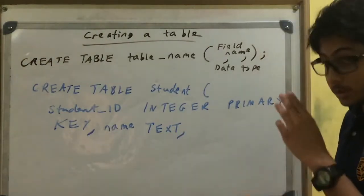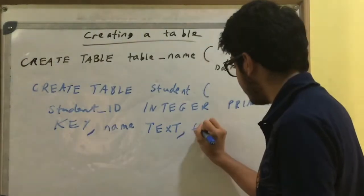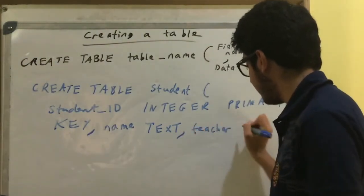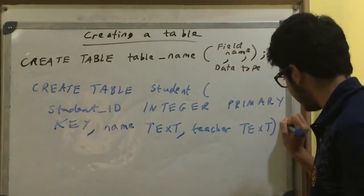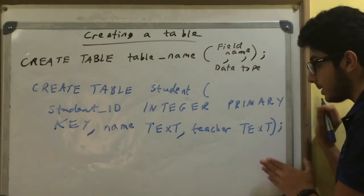And then let's have this text data type, comma, new field name: teacher. And this data type would be text. And then close brackets and semicolon to end the statement.